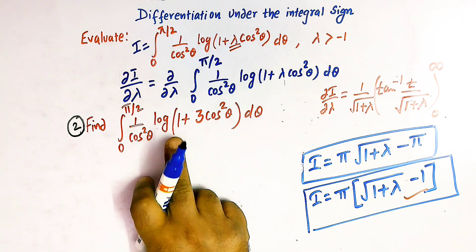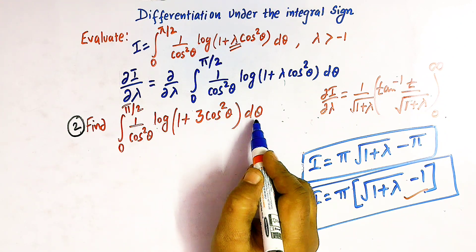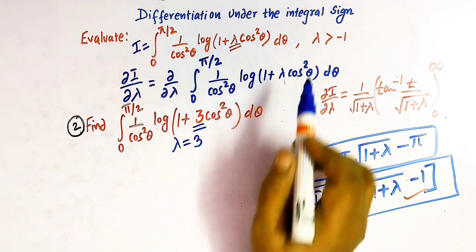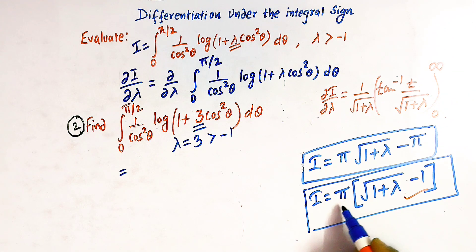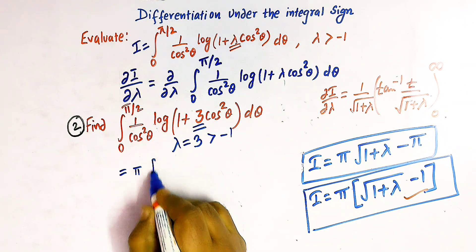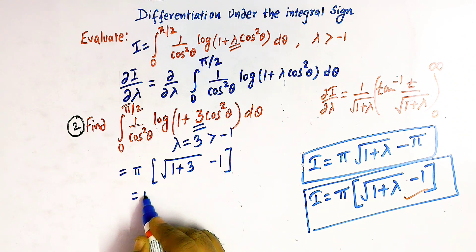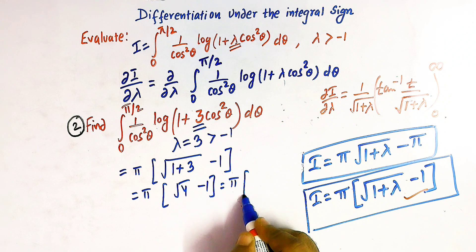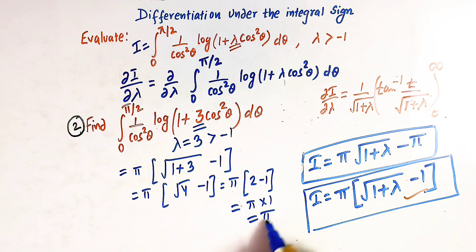Similarly, for the integral from 0 to π/2 of (1/cos²θ)·log(1 + 3cos²θ) dθ, we compare with our formula and identify λ = 3 (which satisfies 3 > −1). Directly applying the result: i = π·(√(1+3) − 1) = π·(√4 − 1) = π·(2 − 1) = π. So the value of this integral is π.